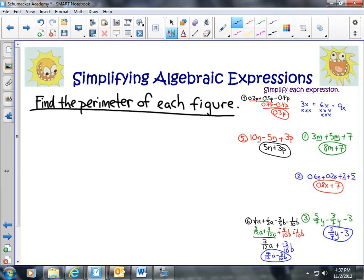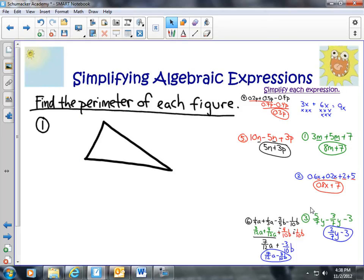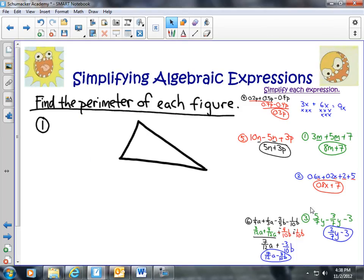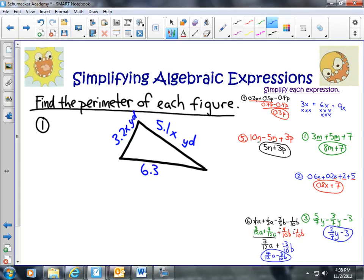All right, so we'll do this. We're going to go ahead and just make a triangle for number one here. I don't know how accurate this will be, but we'll do this, this, and this. All right, good enough. And I'm going to go ahead and make this a little bit bigger. All right, so. Actually, I'm going to move this back over here. So, let's go ahead and identify the lengths. We're going to say this is 5.1x yards, 3.2x yards, and then 6.3x yards. And we need to find the perimeter.